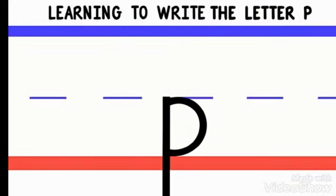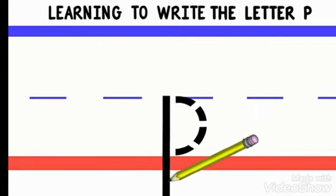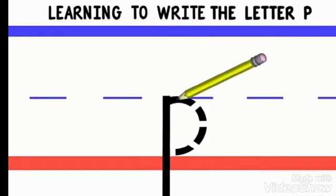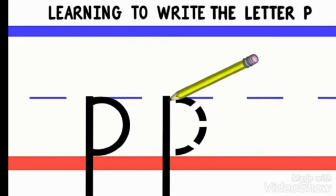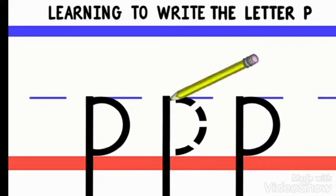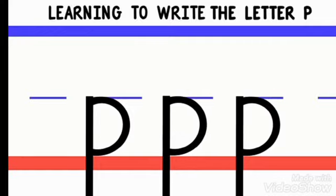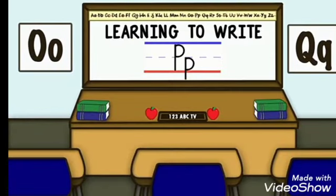Now we will make sound P. Start from the middle line, come down and down, go up and come round. Start from the dot, come down and down, go up and come round. It's sound P. Start from the dot, come down and down, go up and come round. Sound P. Letter is P. Sound is P. Thank you.